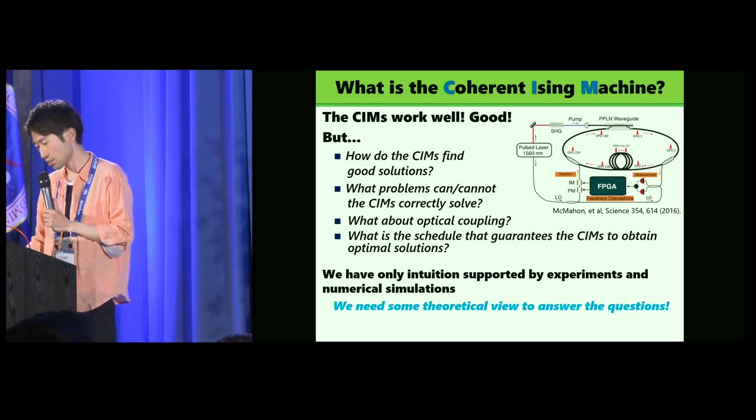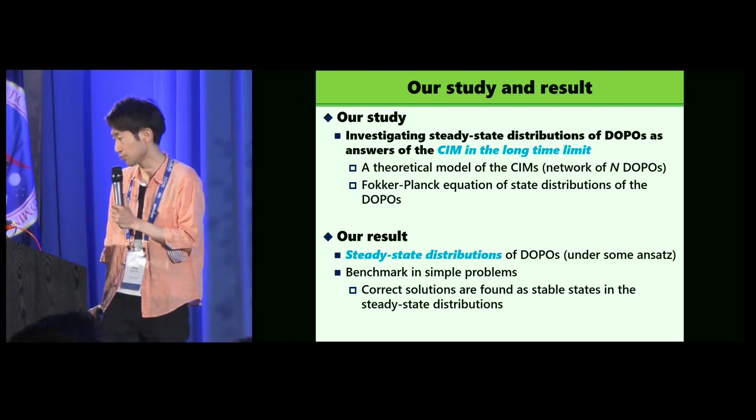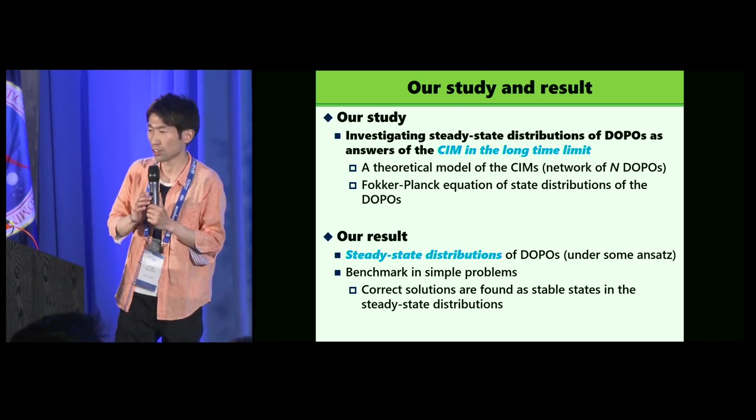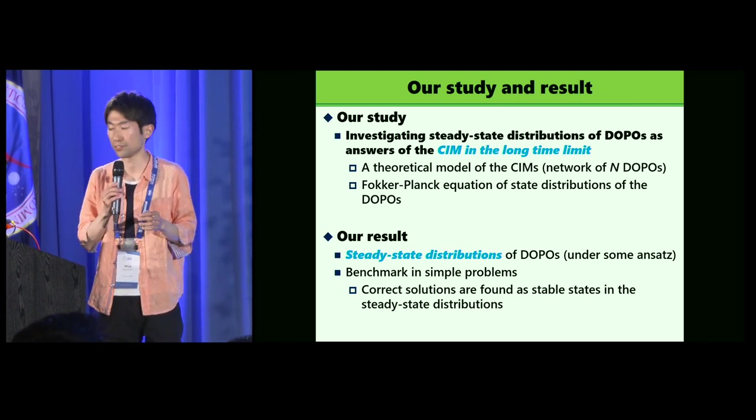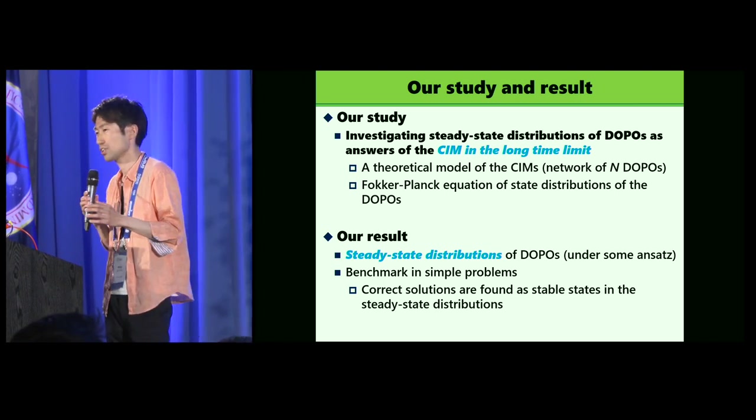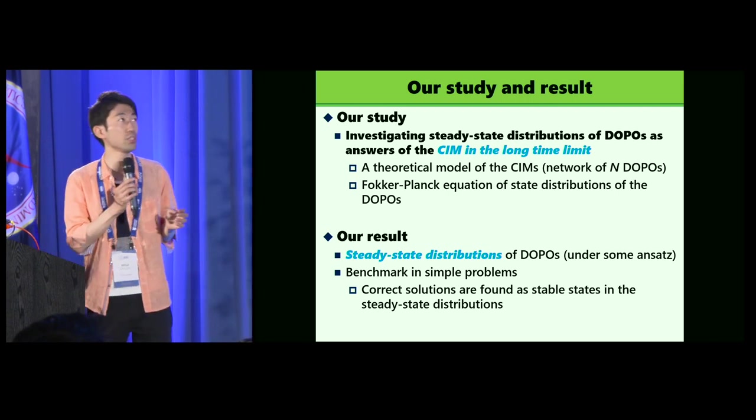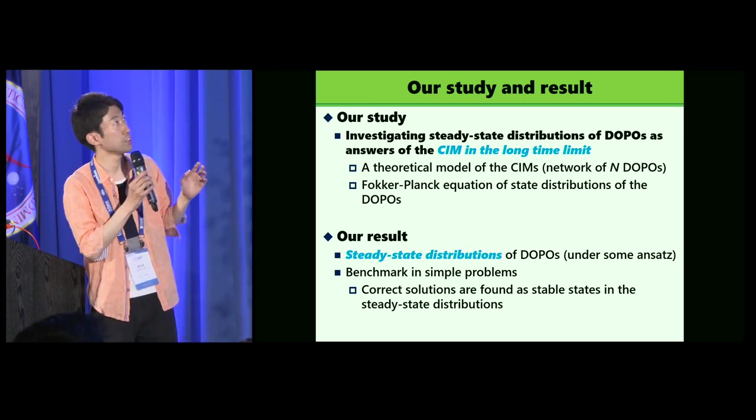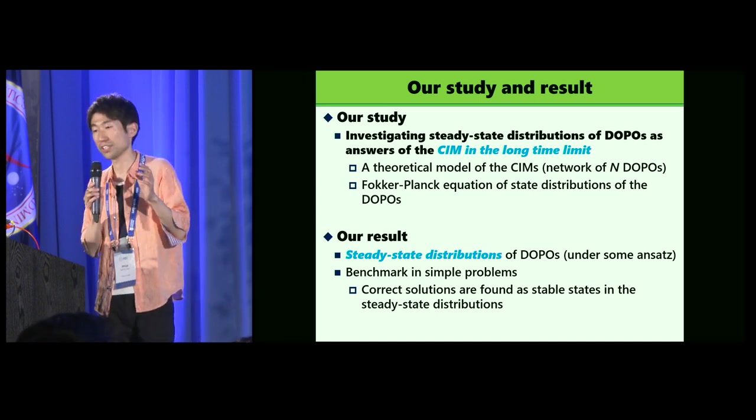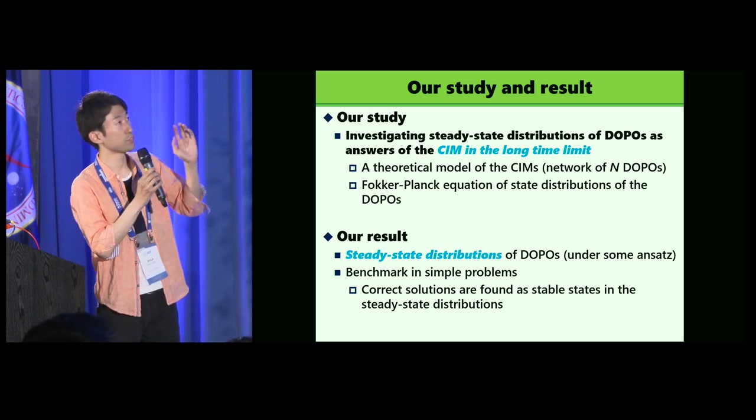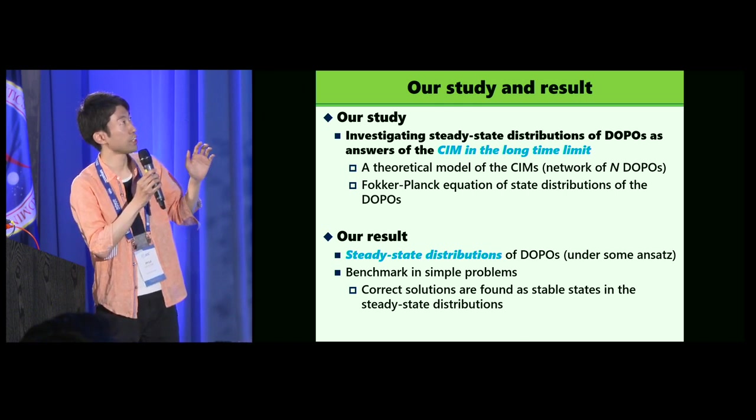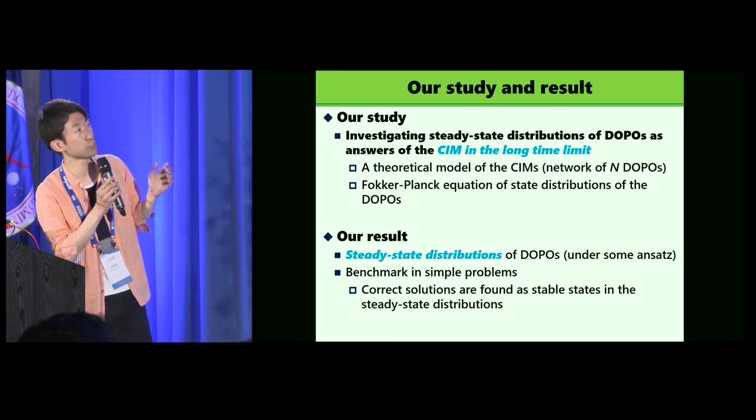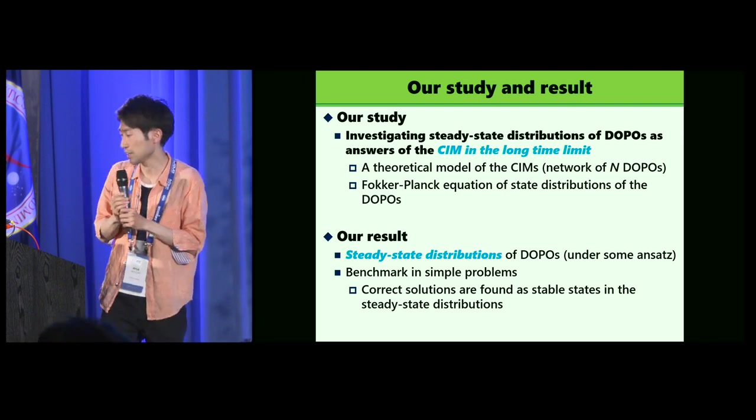Actually, our study is investigating steady-state distributions of DOPOs as answers of the CIM in long-term limit to target optimization problems. To this end, we set a theoretical model of CIMs, that is network of DOPOs, and next, we obtain a Fokker-Planck equation of state distributions of the DOPOs. Our result is that the steady-state distributions are obtained, but it's under some ansatz. To verify the validity, I show the benchmark in simple problems, and then correctly, the correct solutions are found as stable states in the steady-state distributions.